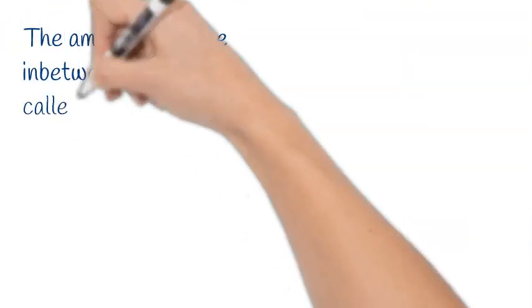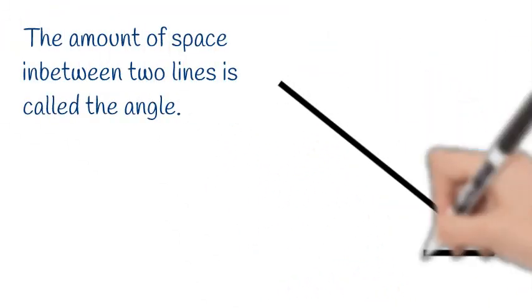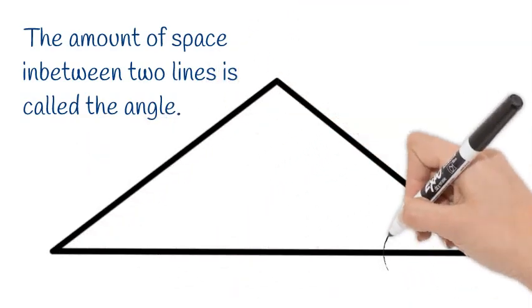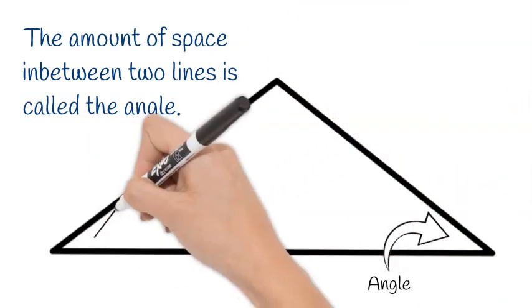The amount of space in between two lines is called the angle. Angle means corner.